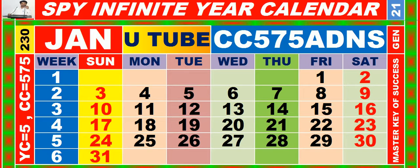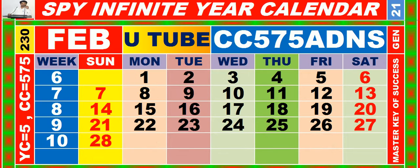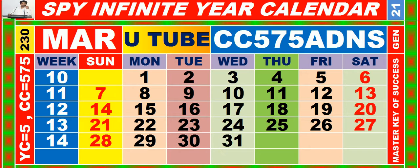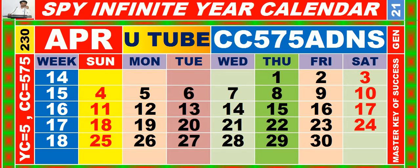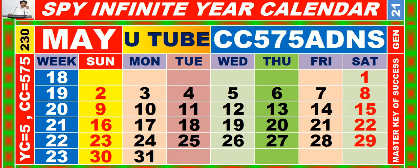Calendar for the month of January having calendar code equal to 5,7,5. Calendar for the month of February having calendar code equal to 5,7,5. Calendar for the month of March having calendar code equal to 5,7,5. Calendar for the month of April having calendar code equal to 5,7,5. Calendar for the month of May having calendar code equal to 5,7,5.